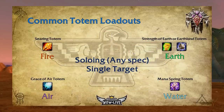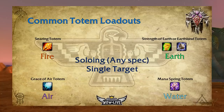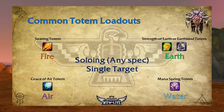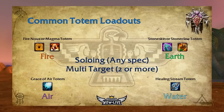Now let's go over common totem loadouts. When soloing — any spec including elemental — for fire put down Searing Totem for a single-target DoT; for air use Grace of Air to increase agility; for earth, use Strength of Earth if you're not earthbind kiting or Earthbind Totem if you are; and for water use Mana Spring to regen mana during fights. Try to strategically place totems to draw enemies toward them so you don't have to keep re-dropping them.